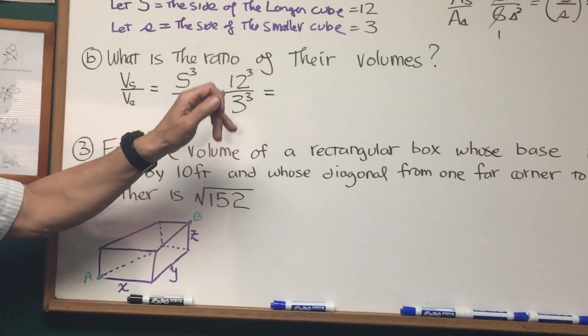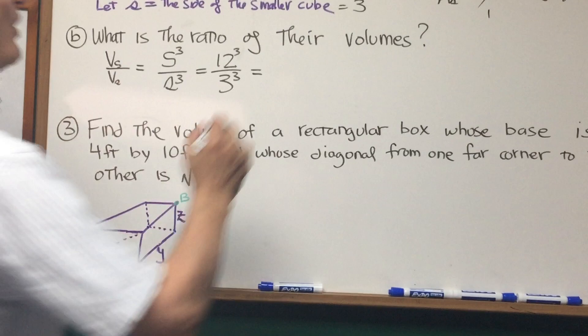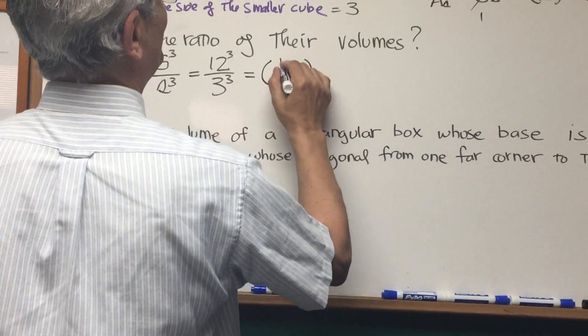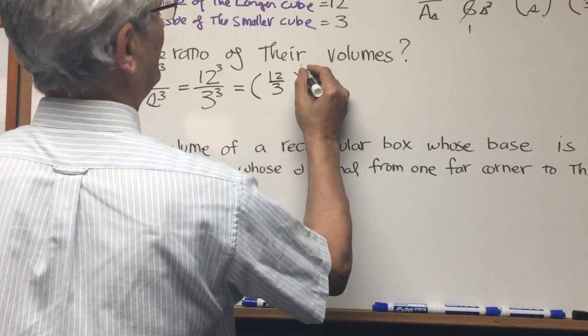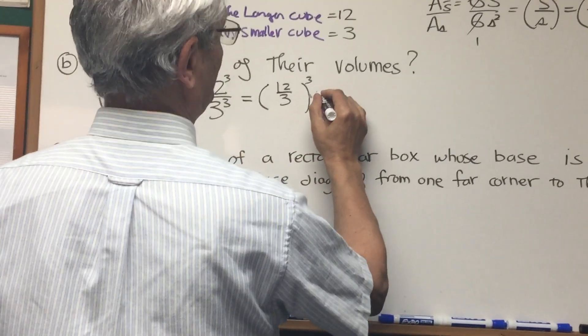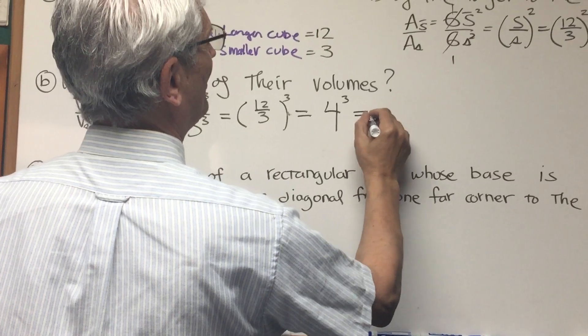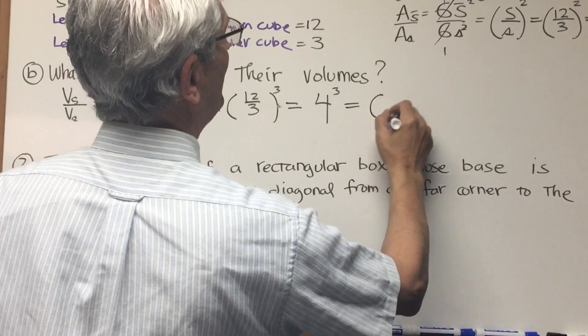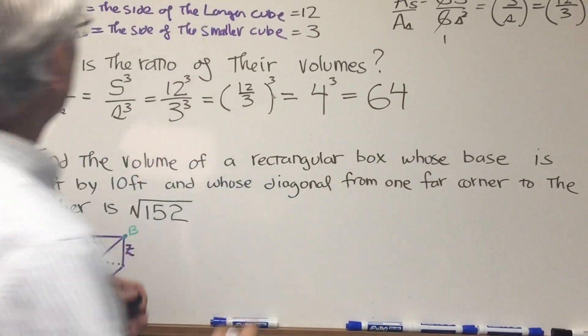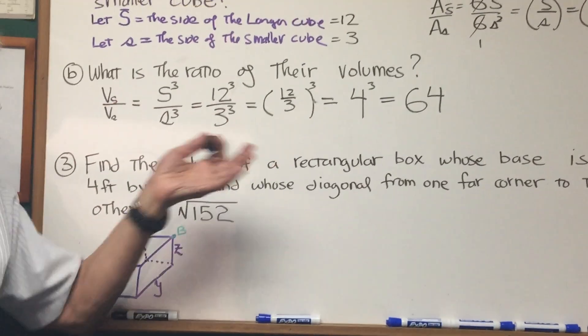Now, instead of cubing 12 and cubing 3, what we're going to do is switch the order of operations, which is allowable here, and it's 12 over 3 to the third power, that is. 12 over 3 is 4 to the third power, and that's 16 times 4. That's 64. So the ratio of their volumes is 64.